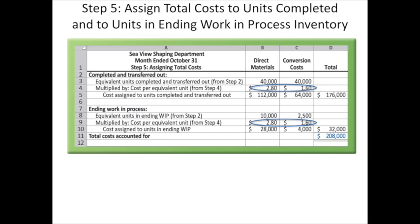The ending work in process had 10,000 equivalent units as to materials, multiplied by $2.80, giving us $28,000 assigned to ending work in process for materials. For conversion, only 25% were complete, so 2,500 equivalent units times $1.60 per equivalent unit gives us $4,000 assigned to work in process for conversion cost.